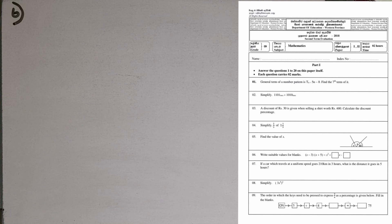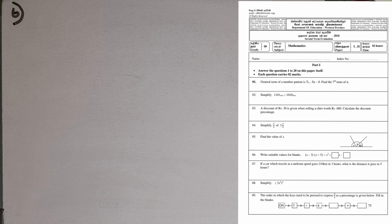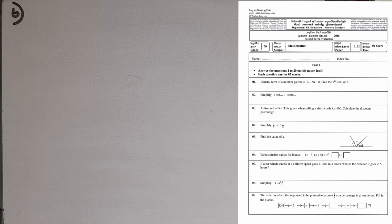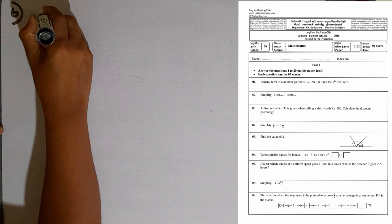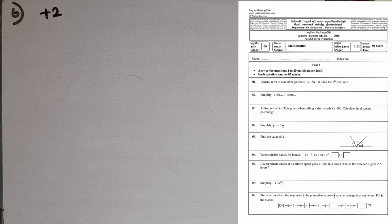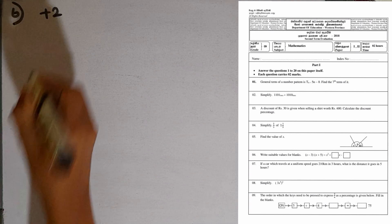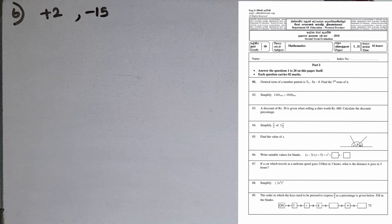Question number 6: write suitable values for the blanks. x minus 3 times x plus 5 equals x squared plus blank times x minus blank. Expanding: x times x is x squared, x times 5 is plus 5x, minus 3 times x is minus 3x. Adding 5x and minus 3x gives plus 2x, so the first blank is 2. Then minus 3 times plus 5 is minus 15, so the second blank is 15.